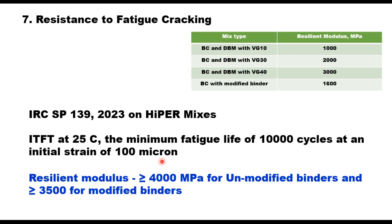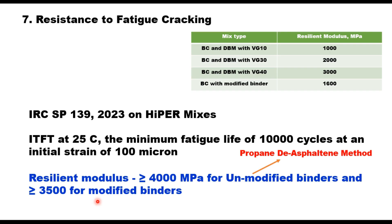IRC SP 139 provides guidelines for high performance mixes and states that the ITFT should be conducted at 25°C, and a minimum fatigue life of 10,000 cycles should be obtained at an initial strain of 100 microns. The secant modulus should be more than or equal to 4000 MPa for unmodified binders and more than 3500 MPa for modified binders. Unmodified binders are produced in the refinery using the propane de-asphaltene (PDA) method, whereas modified binders are produced by modifying VG30 or VG40 with some modifiers.